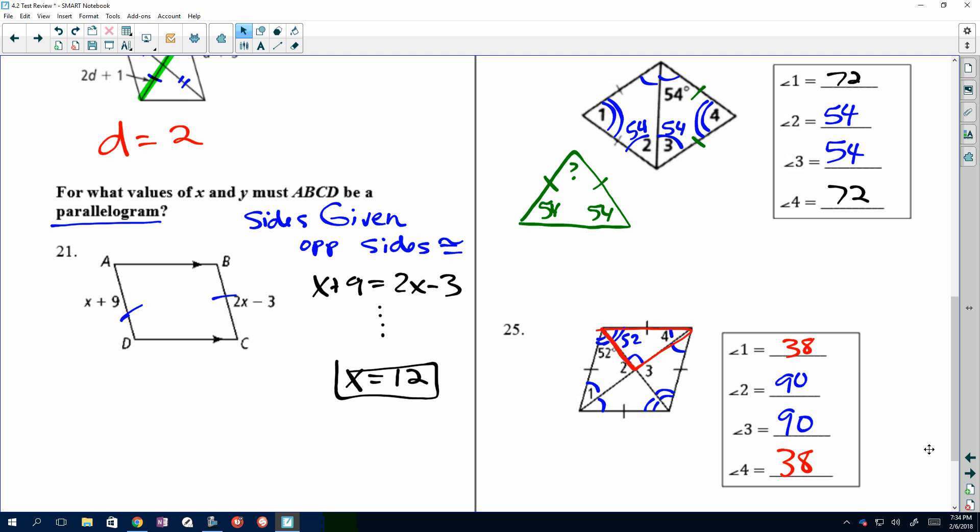Alright, so that helps you with that page. Remember, you're going to have to use your summary sheet to find the missing parts, or use the properties to find your missing variable and missing angle. Hit the next arrow to get to the next sheet. Thank you.